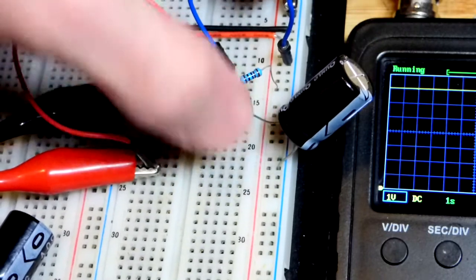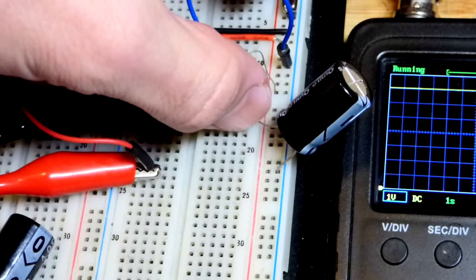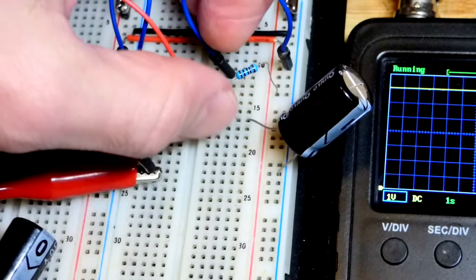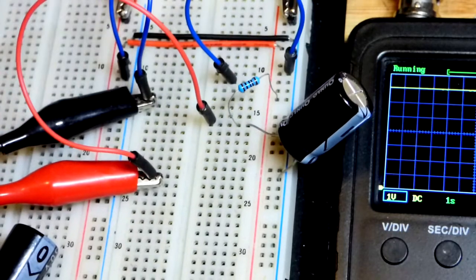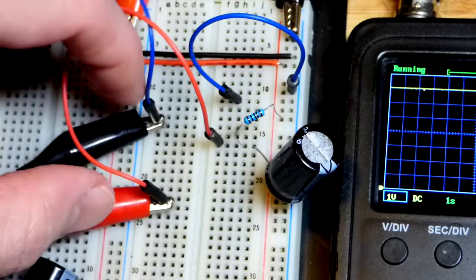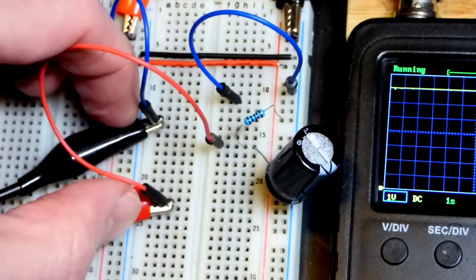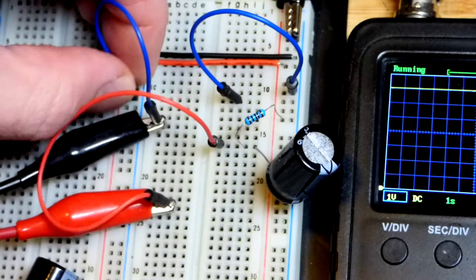The negative side of a 1000 microfarad capacitor goes to the negative power supply and the positive side connects to this 1000 ohm resistor that goes to the positive side of the power supply to charge it. This is the oscilloscope cable so we can look at the voltage of the capacitor in relationship to ground.